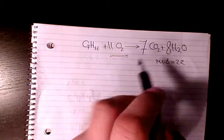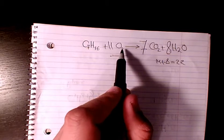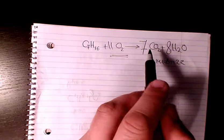So one mole of heptane reacts with 11 moles of oxygen to produce seven moles of CO2 and eight moles of water.